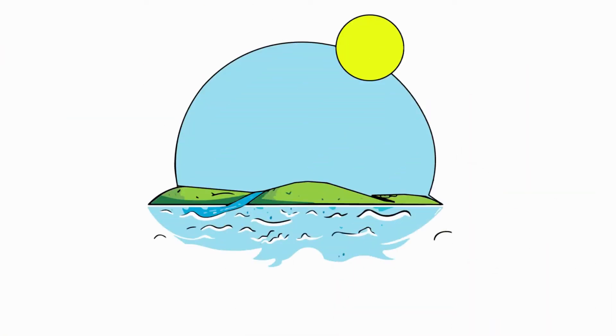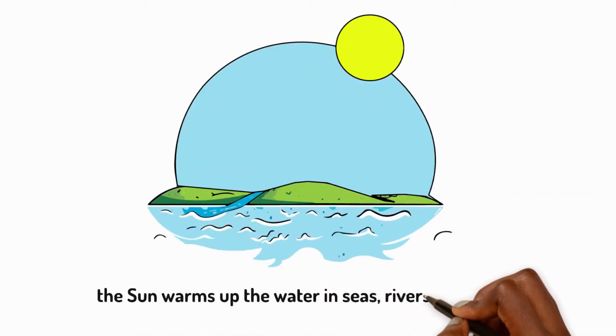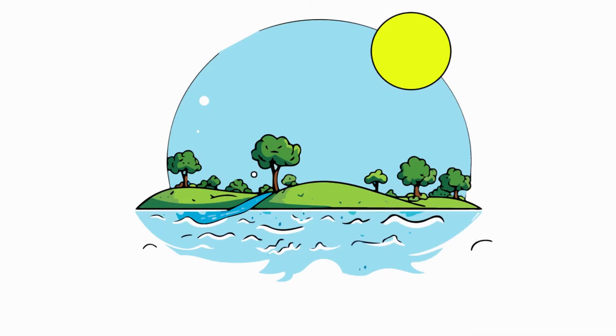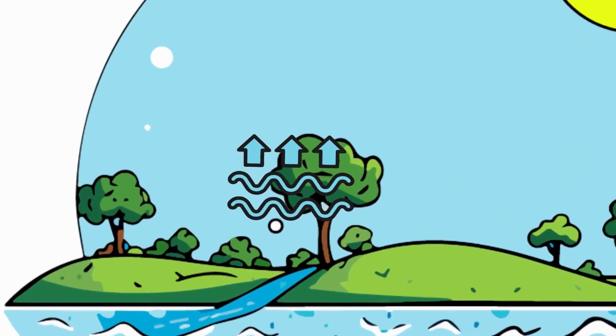The sun warms up water in seas, rivers and lakes. This makes it evaporate into the air as water vapor. Plants release water vapor into the air through their leaves.